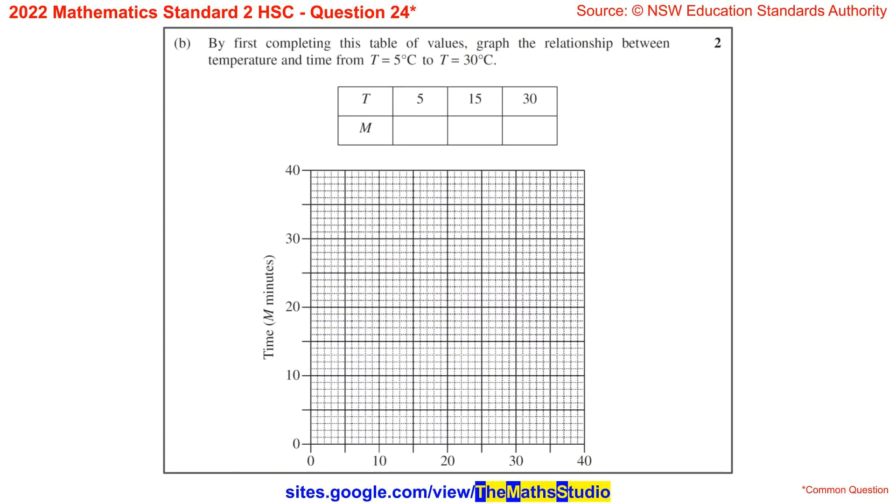Part B. By first completing this table of values, graph the relationship between the temperature and time from T equals 5 degrees Celsius to T equals 30 degrees Celsius.